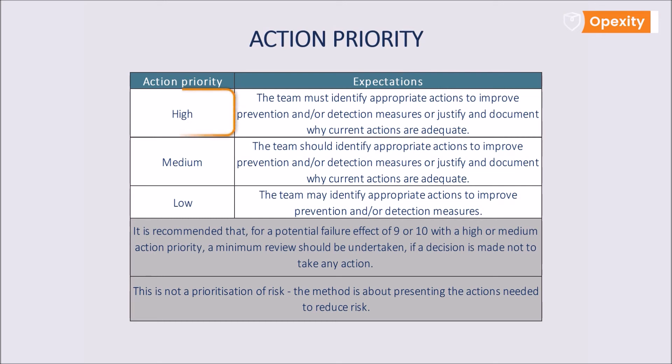A high action priority means that the team must either identify appropriate actions to improve prevention and/or detection measures or justify and record why current actions are adequate. A medium action priority means that the team should either identify appropriate actions to improve prevention and/or detection measures, or justify and record why current actions are adequate.